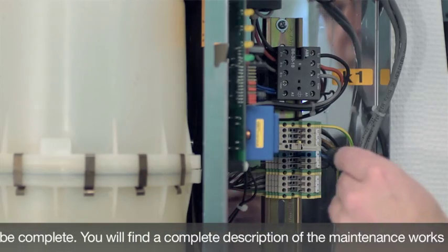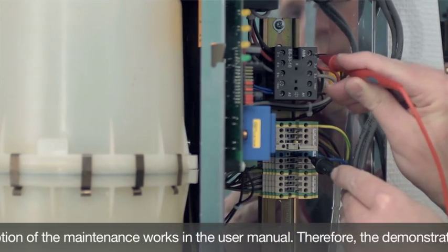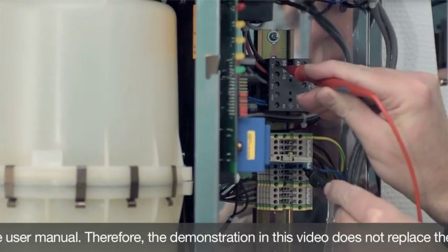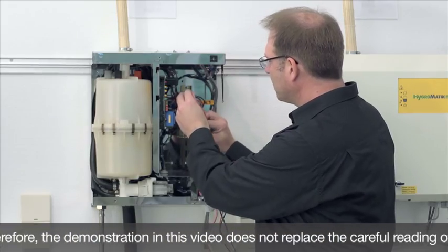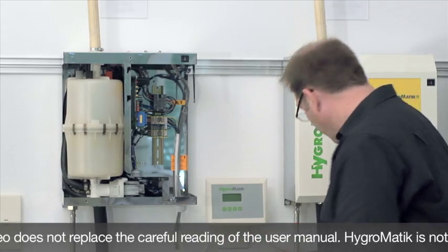Although we had disconnected the power supply earlier, I will check again anyway that no voltage is in fact applied to the unit. That means I will take measurements again at all points of the main contactor. There is no voltage applied, so I can be reassured and work in the left area.